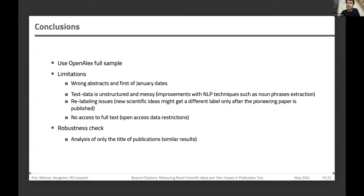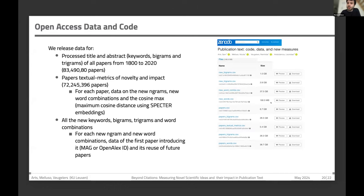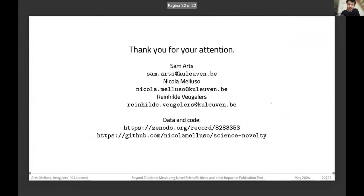The most important thing is that we release data. Someone can download the data on Zenodo and access all information for all papers — including the number of new words that a paper introduced, the number of new bigrams and trigrams introduced. For each bigram, we identify the first paper introducing it. The code is also available. Thank you.